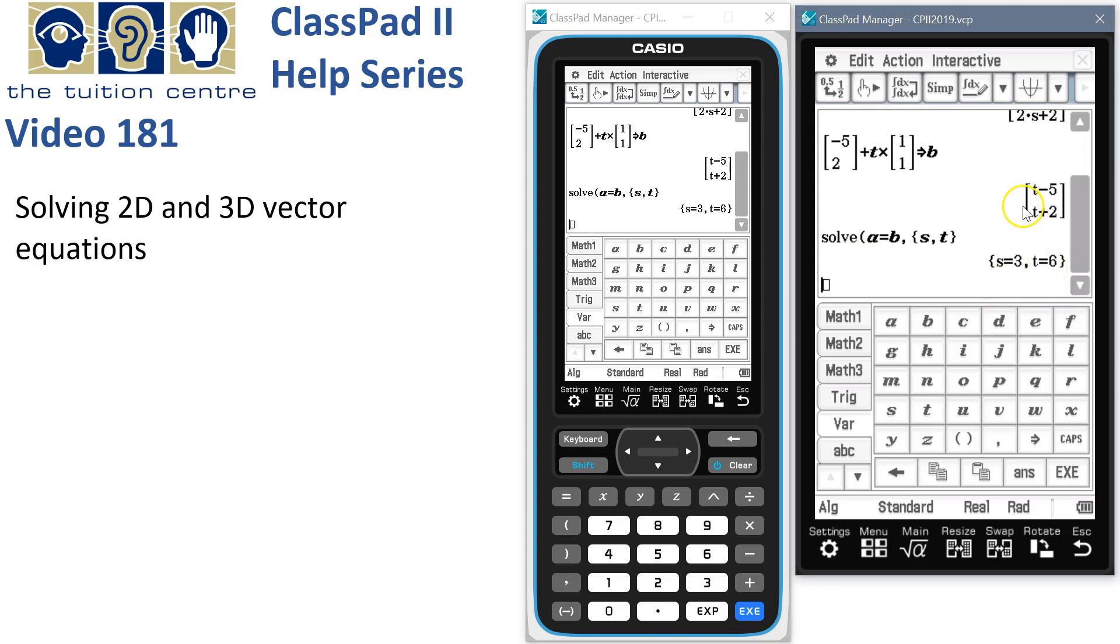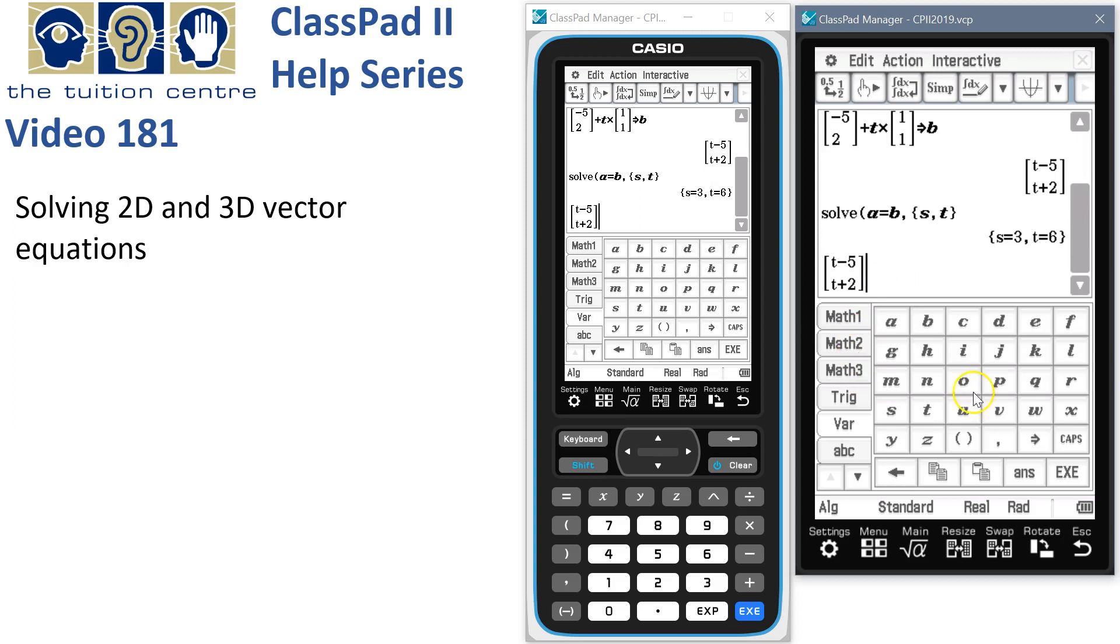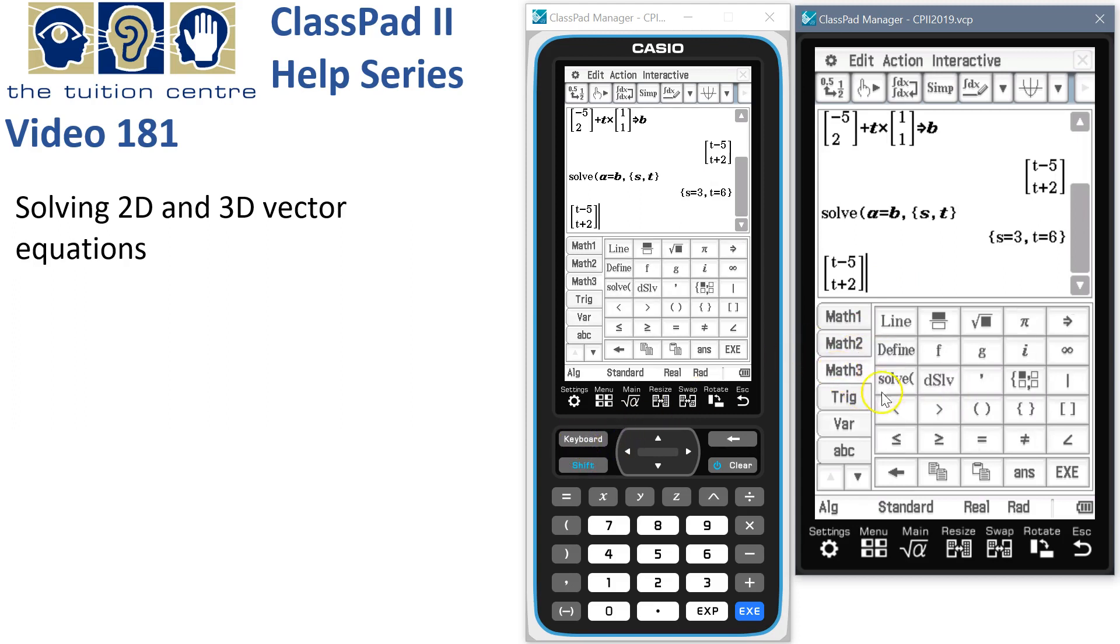If we take particle B and substitute in, using the given that T is equal to 6, then they intersect at 1, 8.